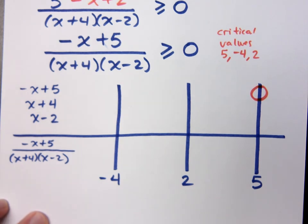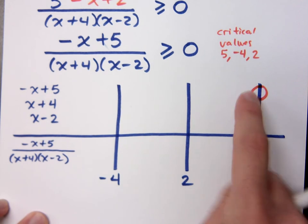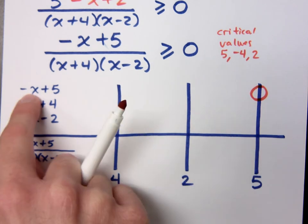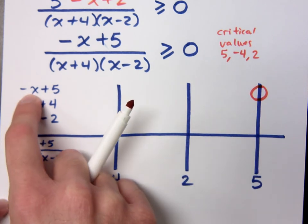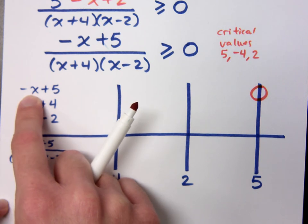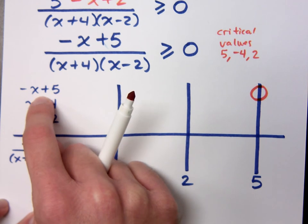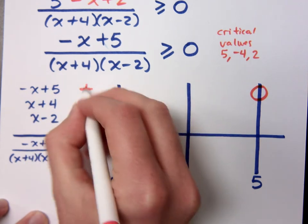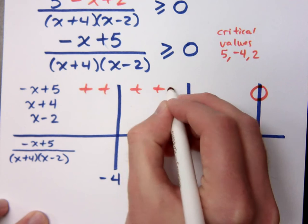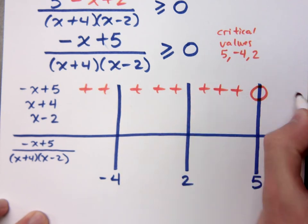And if you're not sure, pick a number on the left side of 5. Pick 0. If I plug in 0, what kind of number do I get? If I plug in 0, I get positive. If I pick something greater than 5, what do I get for this guy? Negative. So that's why it's positive on the left and negative on the right.